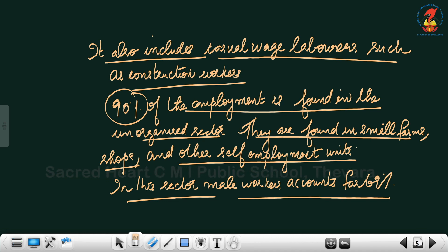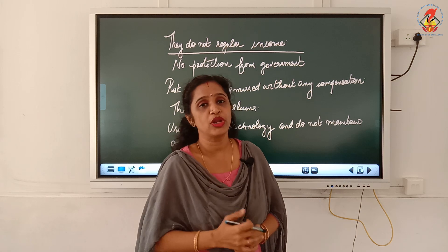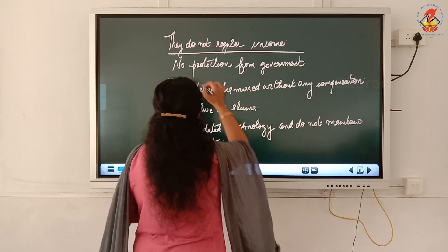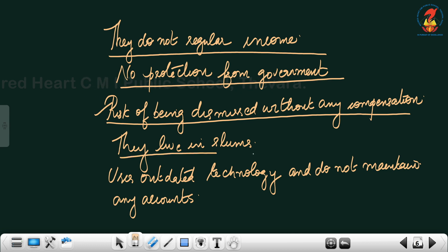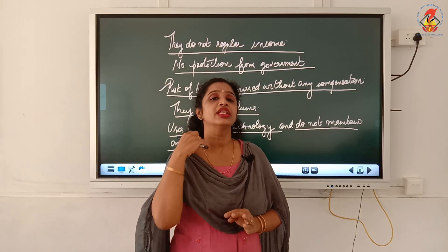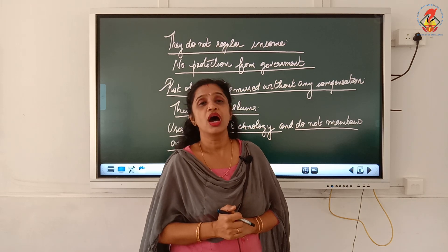In this sector, male workers account for 69 percent and the rest represents female workers. Informal sector workers do not have a regular income — if they do not work for one day, they will not receive income. There is no protection for them from the government. The risk of being dismissed without any compensation is very high. They often live in slums, use outdated technology, and do not maintain proper accounts of the work they have done.